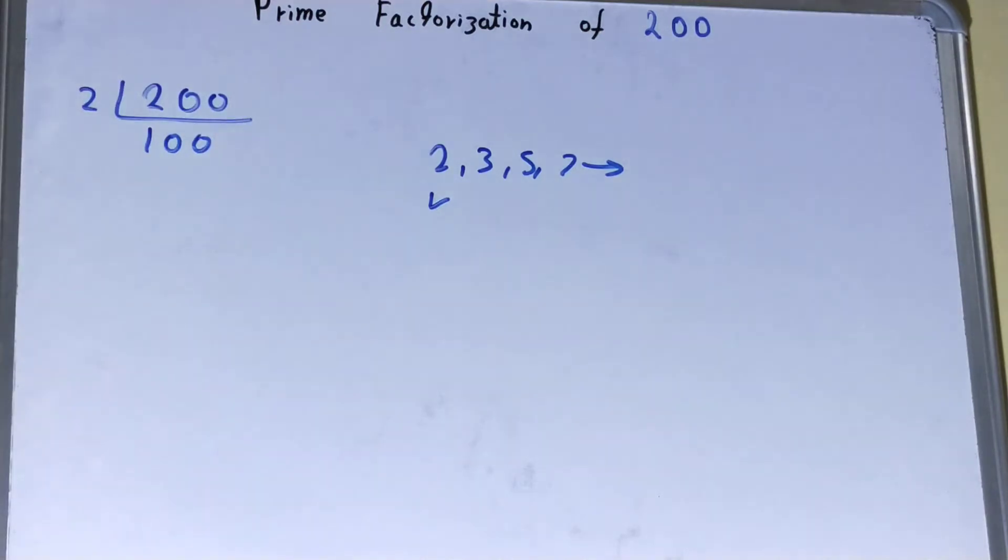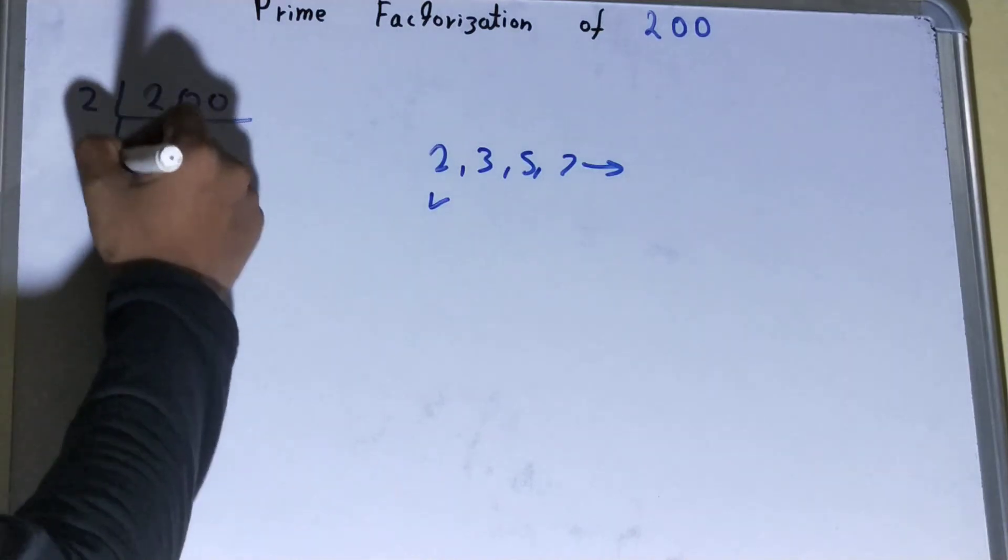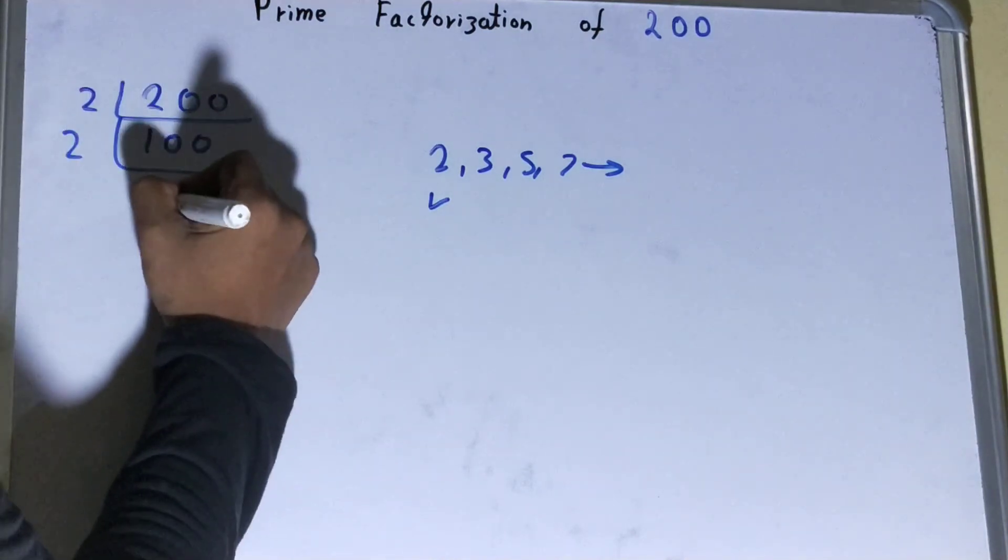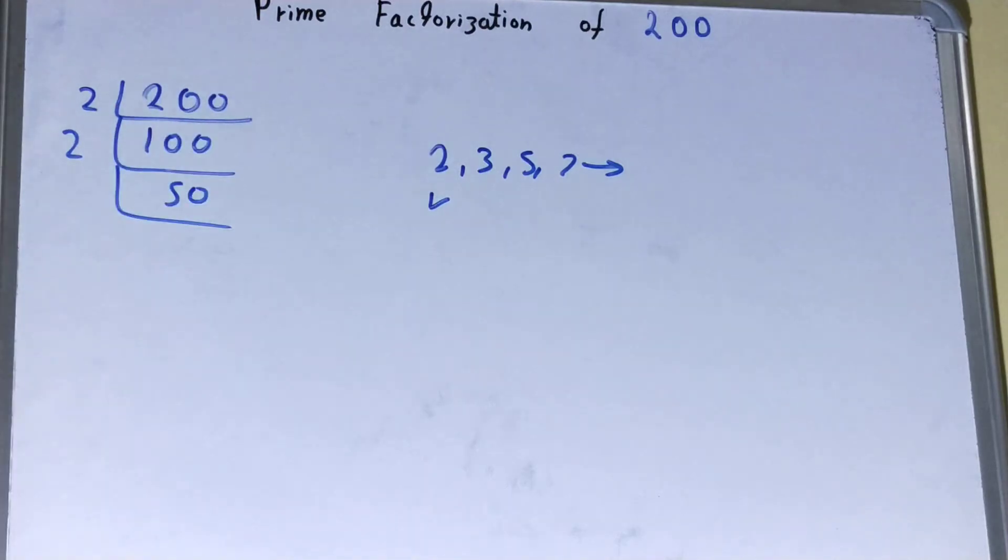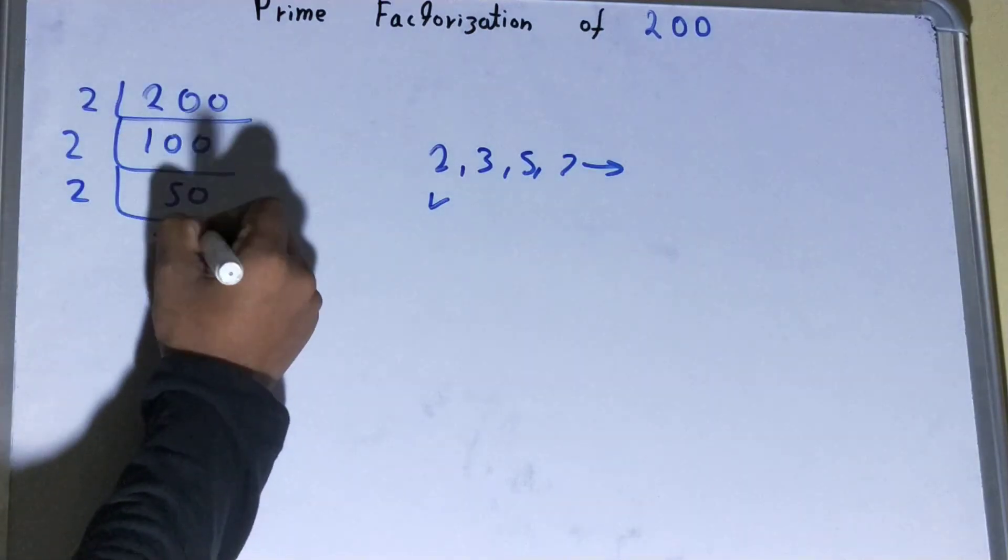Again we'll repeat the same process with this 100. Is this 100 divisible by 2? It is divisible, so we'll divide it and we'll be left with 50. Again same process. Is this 50 divisible by 2? It is divisible, so we'll divide it and we'll be left with 25.